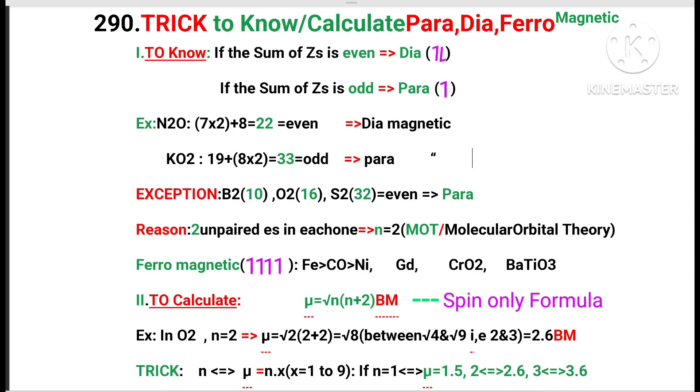Ferromagnetic substances, where all the unpaired electrons are in same spin. Substances are iron, cobalt, nickel. Among these, iron is more ferromagnetic than cobalt, cobalt is more ferromagnetic than nickel. Gadolinium, chromium dioxide, barium titanium trioxide.